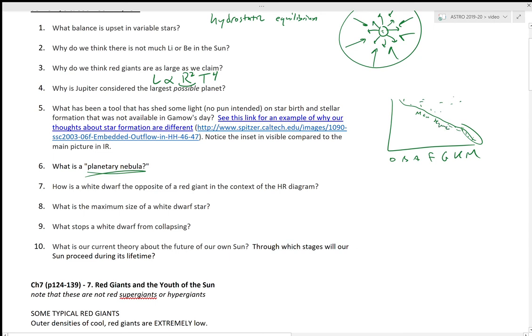Well, this is our main sequence. A red giant is going to be up here, and a white dwarf down here. So red giants are large and red, white dwarfs are small and blue-white. So they're on diagonal opposites of each other on the HR diagram.